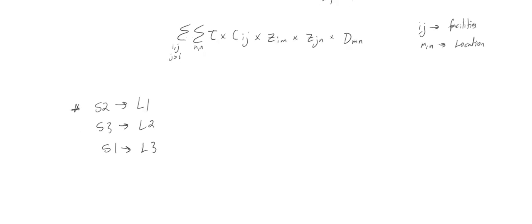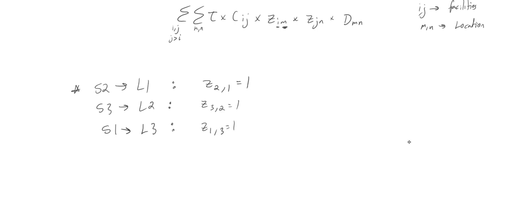After you've got your allocation sorted out, you have to convert it into the Z variable. Z is indexed by two letters: i (the facility) and m (the location). So Z_21 equals one because it's a binary variable — it equals one if facility two is located in location one, which matches our allocation. Similarly, Z_32 equals one, and Z_13 equals one.